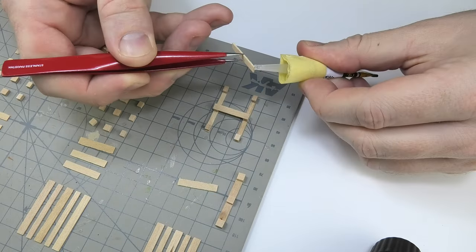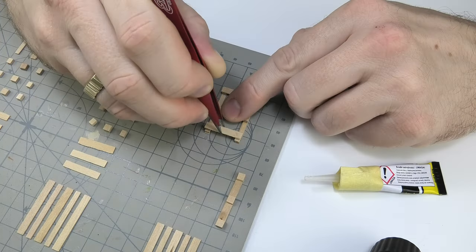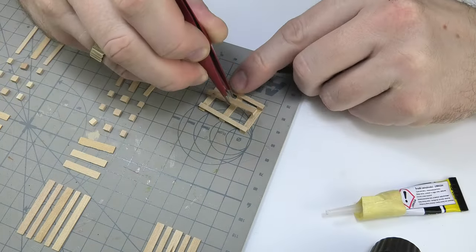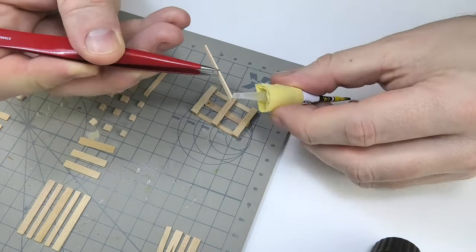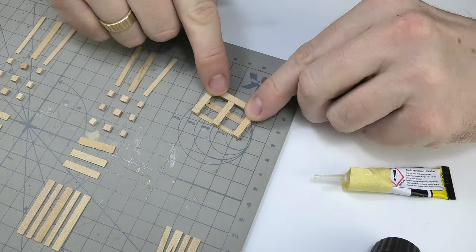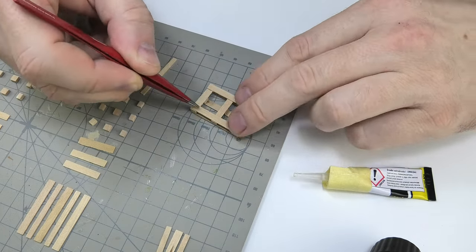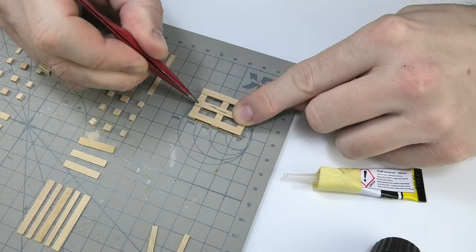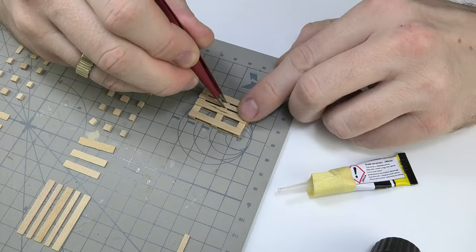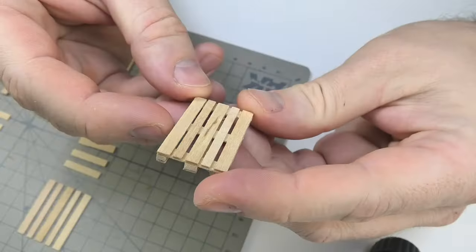The kit that I have here was produced by RB Model and unfortunately it's currently very difficult to find, if it's possible to find it at all. Its great advantage is the price and the fact that it consists of wooden elements. For the purpose of this video I put together one pallet from start to finish, but in general I do it in series thanks to which I limit the time needed to build the entire set.